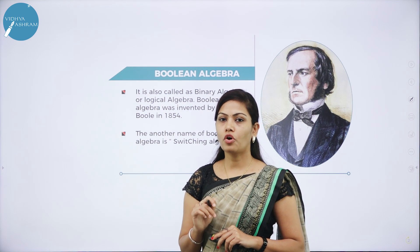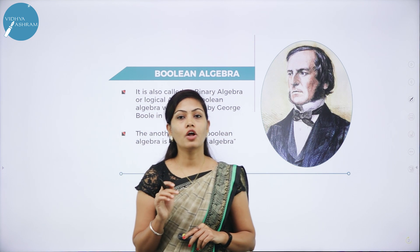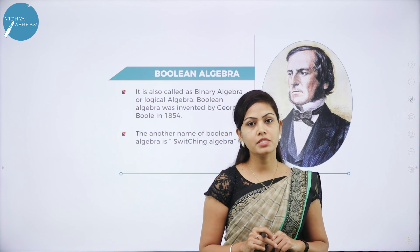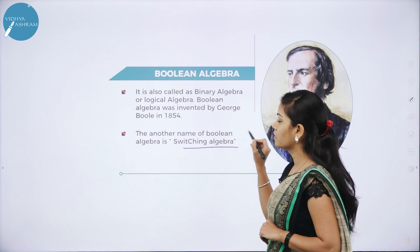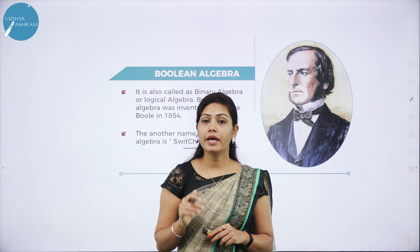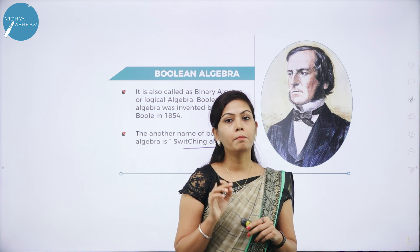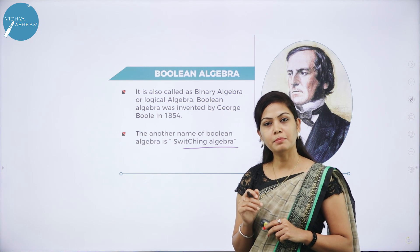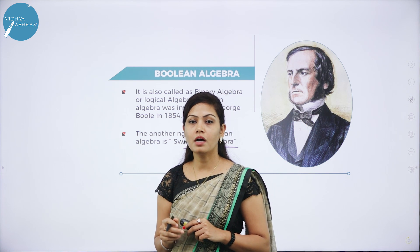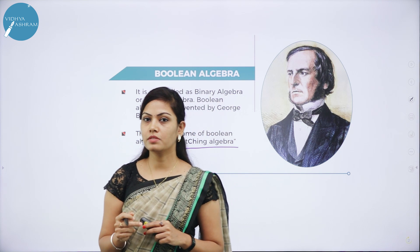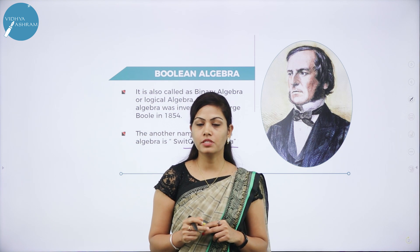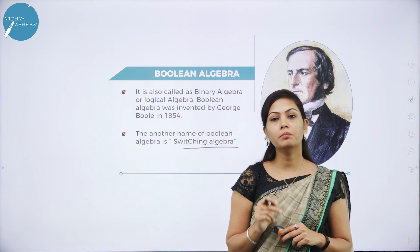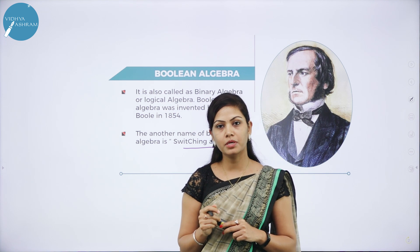Boolean Algebra is also known as Binary Algebra and Logical Algebra. Another name of Boolean Algebra is Switching Algebra. Boolean Algebra is an algebra which deals with the Binary Number System. Number Systems are representations of numbers. There are different kinds of number systems: Binary Number System, Decimal Number System, Octal Number System, and Hexadecimal Number System.